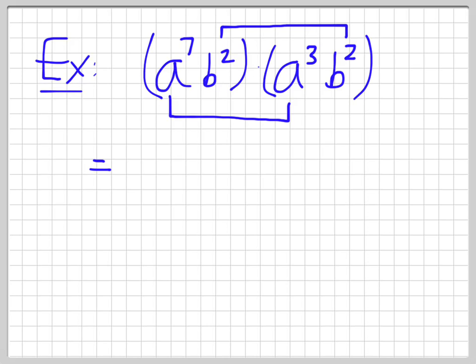So what we do is we're multiplying this. It's all multiplied. So it becomes a to the 7 plus 3 times b to the 2 plus 2. So that ends up being a to the 10 times b to the 4.